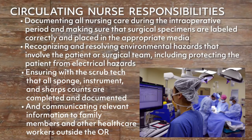The circulating nurse is also responsible for making sure that surgical specimens are labeled correctly and placed in the appropriate media, recognizing and resolving environmental hazards involving the patient or surgical team, including protecting the patient from electrical hazards, ensuring with the scrub tech that all sponge, instrument, and sharp counts are completed and documented, and communicating relevant information to family members and other health care workers outside the OR.